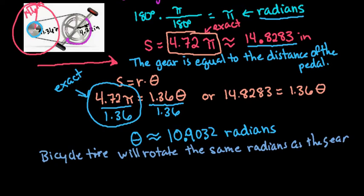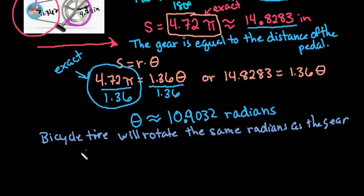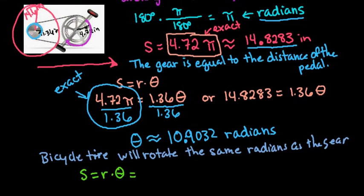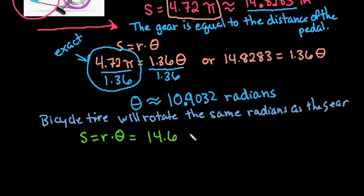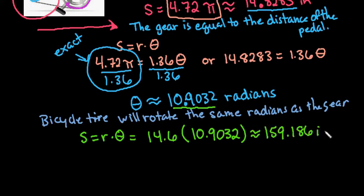To find the linear distance for the bicycle tire, we're going to use the same formula again, S equals R times theta. But this time, our R is going to be 14.6, and then we multiply it by our radian measure of 10.9032. When we do this, we get approximately 159.186 inches. I did the calculations with both the exact and rounded versions, and it was the same within the first three decimal places.